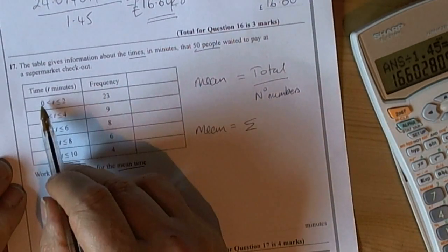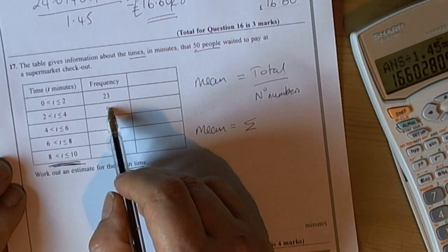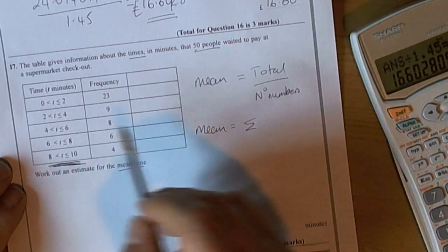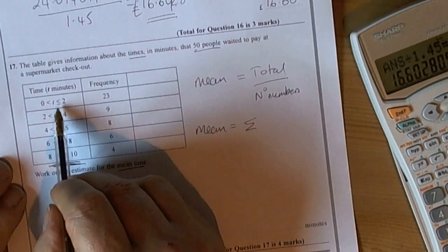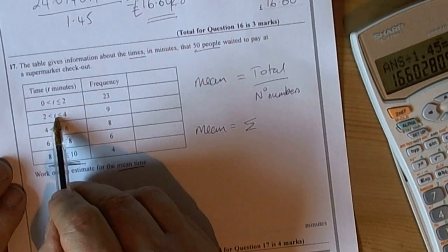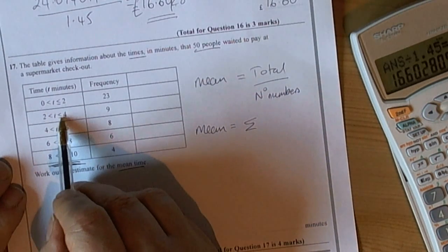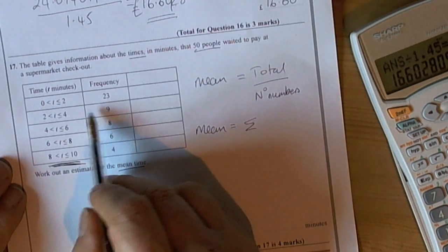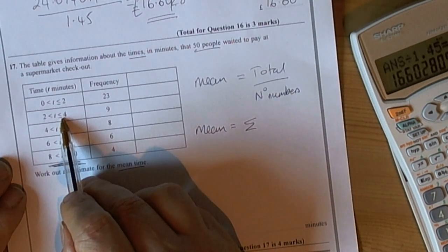You've got 23 here who took between 0 and 2 minutes and 9 people who took between 2 and 4 minutes and so forth. Look at the symbols - this one is less than or equal to 2 minutes, this one is saying time is greater than 2 minutes but less than or equal to 4. So these 9 people took over 2 minutes but less than or equal to 4 minutes.